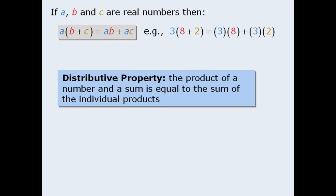Please note that the distributive property also works when the numbers in the brackets are being subtracted. For example, 10 times 7 minus 3 is equal to 10 times 7 minus 10 times 3.